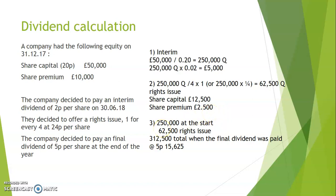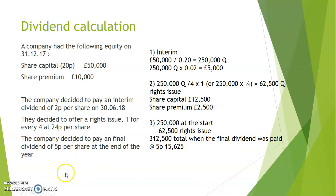For the final dividend: we had 250,000 shares at the start, issued a further 62,500 shares via the rights issue, giving a total of 312,500 shares. Dividends are based on the number of shares, so 312,500 shares times 5p gives a final dividend of £15,625. That covers this topic - the next topics will be on part 4, so please look out for that.